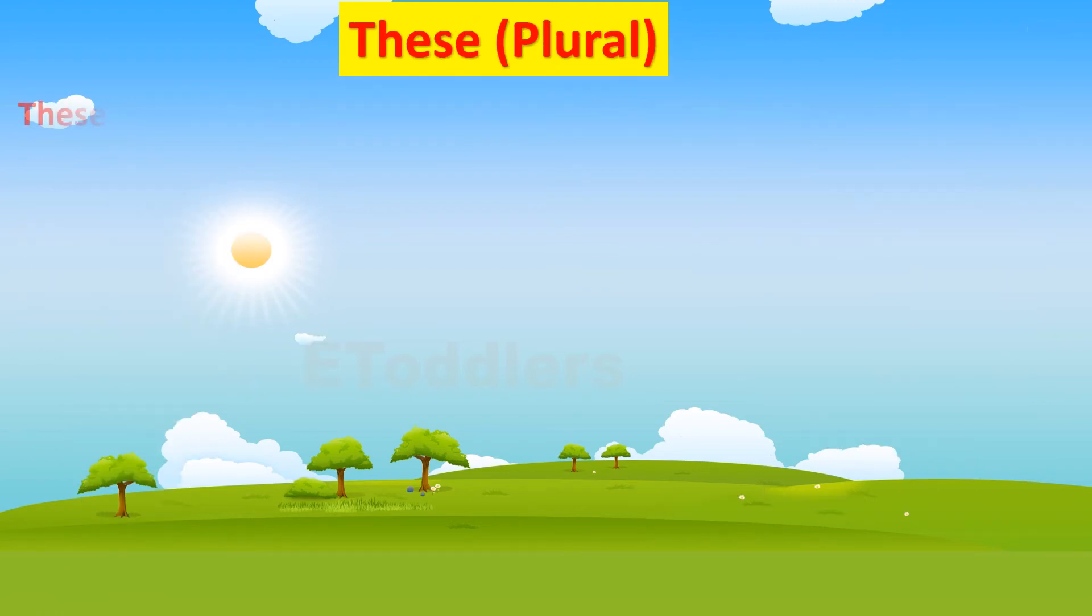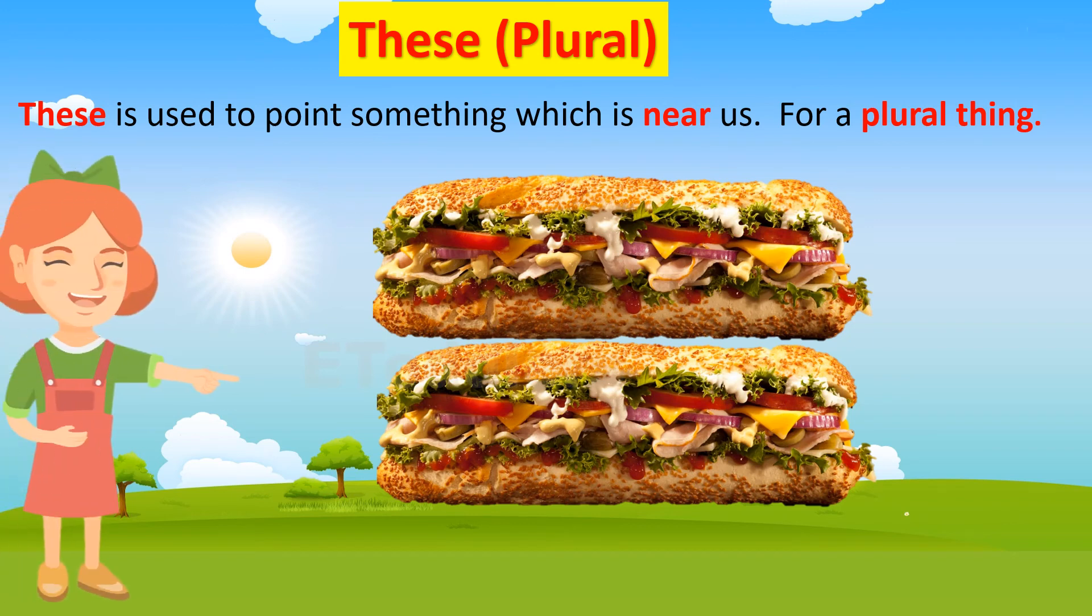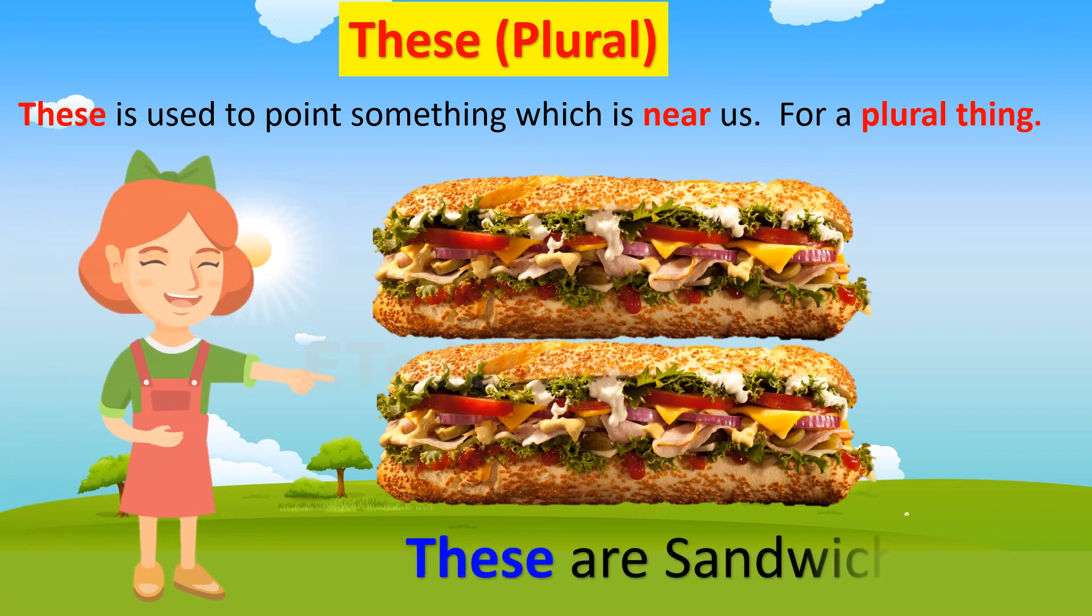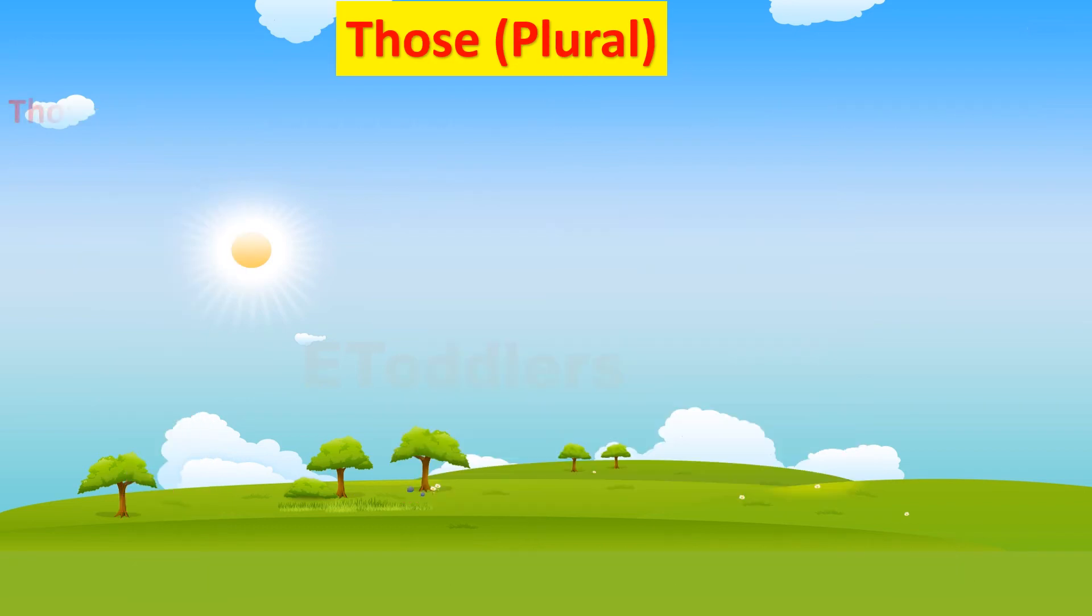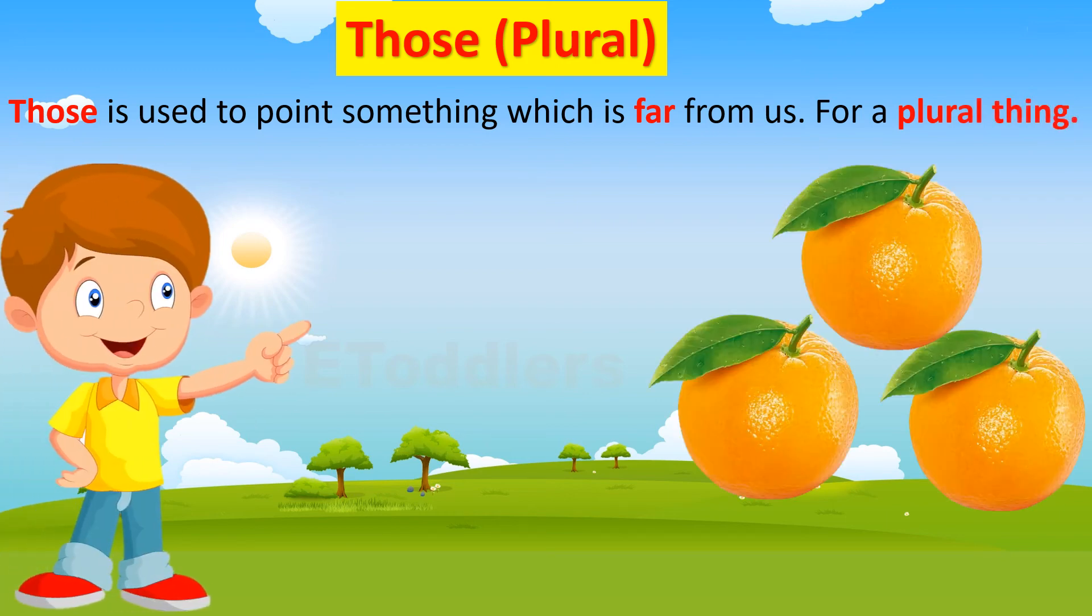These is used to point something which is near us, for a plural thing. Those is used to point something which is far from us, for a plural thing. For example, those are oranges.